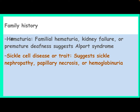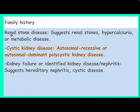Family history: Hematuria in family history may suggest familial hematuria. Kidney failure or premature deafness suggest Alport syndrome. Sickle cell disease or trait in the family suggests sickle nephropathy, papillary necrosis, or hemoglobinuria. Renal stones in the family suggest renal stone disease, hypercalciuria, or metabolic disease. Cystic kidney disease in the family suggests autosomal recessive or autosomal dominant polycystic kidney disease. Kidney failure or nephritis in the family suggests hereditary nephritis or cystic disease.